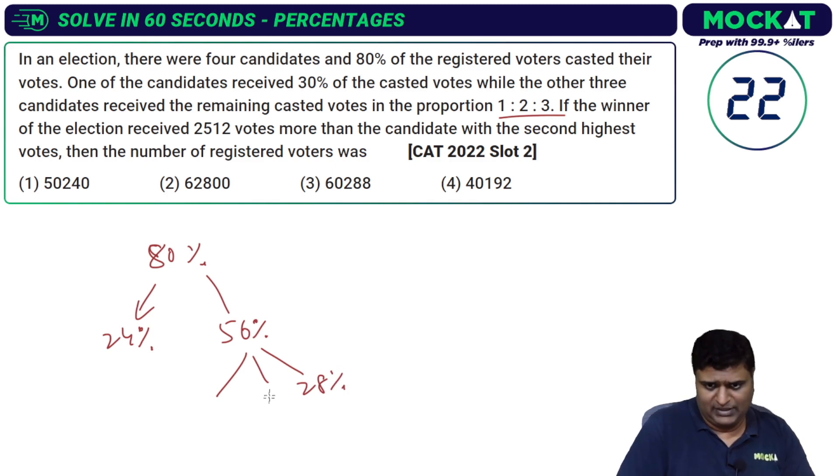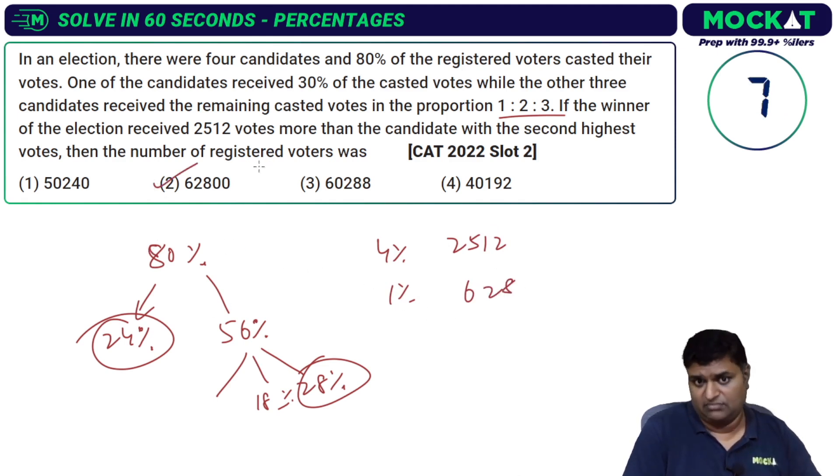The difference between the first and the second is 4 percent, which equals 2512. Then 1 percent is one-fourth of this: 628. Then 100 percent is 62,800. Option 2 is the answer.